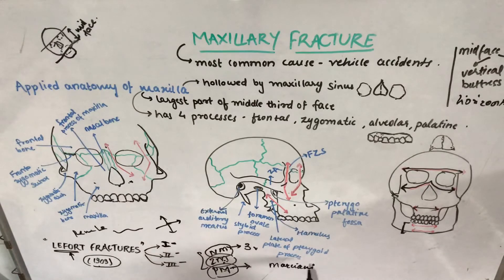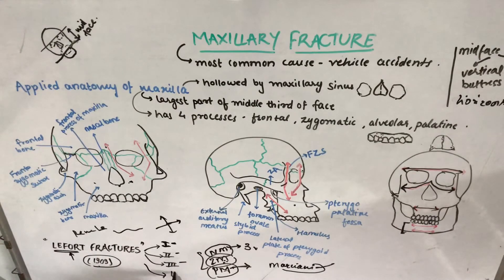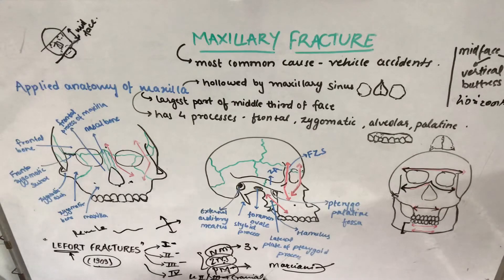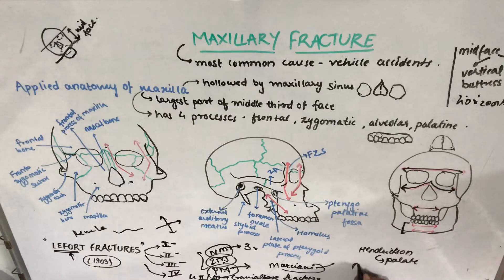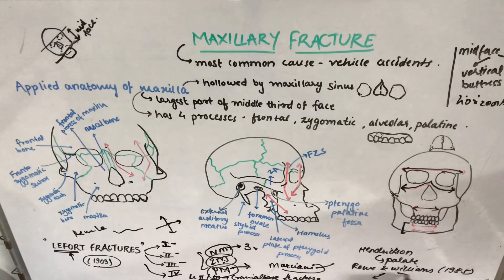Other classifications were also given. Marciani modified LeFort's classification and included a LeFort 4 fracture — essentially LeFort 2 or 3 combined with a cranial base fracture — in 1993. Hendrickson gave a classification for palate fractures. Roe and Williams in 1985 classified fractures into two types: those involving occlusion (teeth and alveolus) and those not involving occlusion.